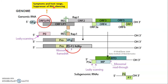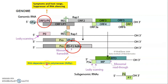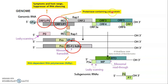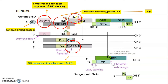ORF1 codes for the P1 protein, a proteinase-containing polyprotein that includes the VPg genome-linked protein at the 5' end. ORF2 produces the RdRp1 replicase-associated protein, which is involved in replication of the virus. Together, ORF1 and ORF2 produce proteins with RNA-dependent RNA polymerase activity essential for viral replication.